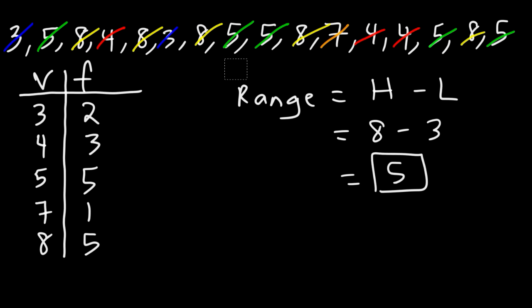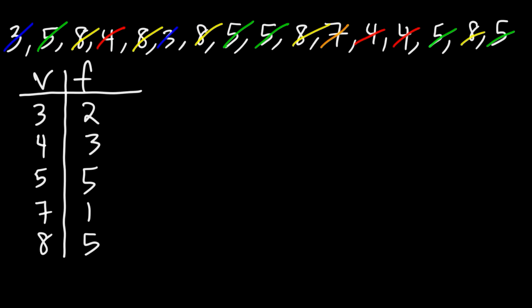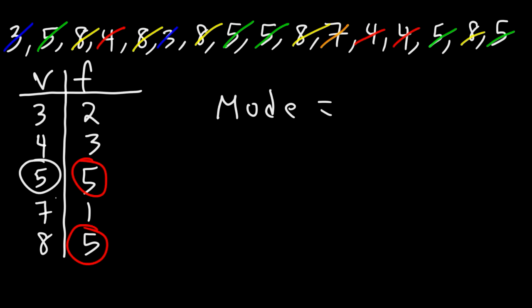Now what about the mode? How can we use the frequency table to calculate the mode? The mode is basically the number in the data set with the highest frequency. In this case, there are two such numbers because the highest frequency is 5. So this is going to be a bimodal data set, meaning that it has two modes. The value of the first mode is 5, and the value of the second mode is 8.